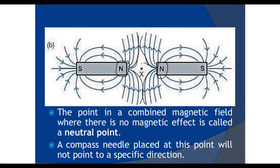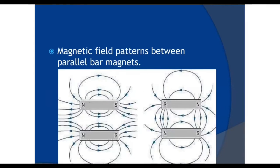The point in the center, point X, is the neutral point because it experiences no magnetic effect — if you place a compass there, the needle will point in no direction. When you place bar magnets in parallel, repulsion occurs and the field lines move away from each other on the repelling side, while attraction occurs on the attracting side with field lines moving from north to south. Outside a magnet, field lines always move from north to south; inside the magnet, they move from south to north.